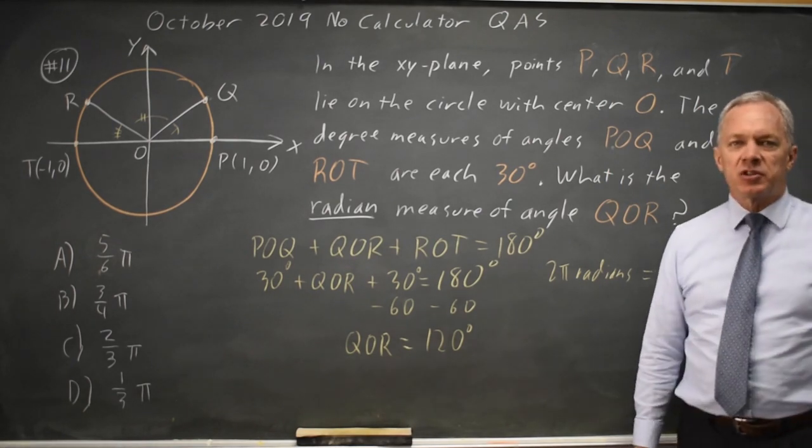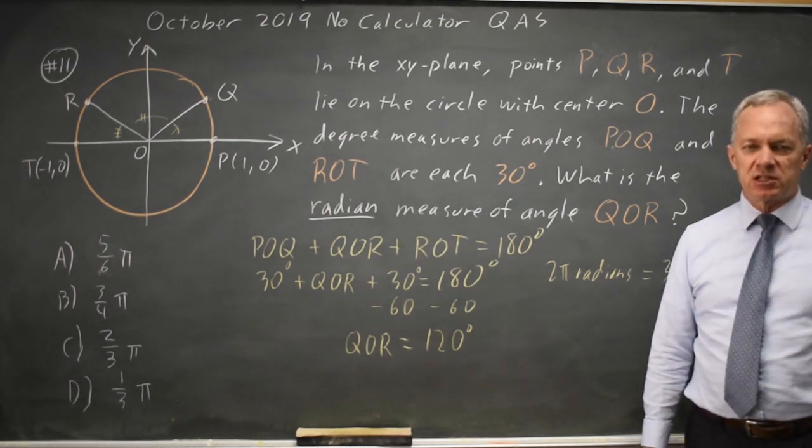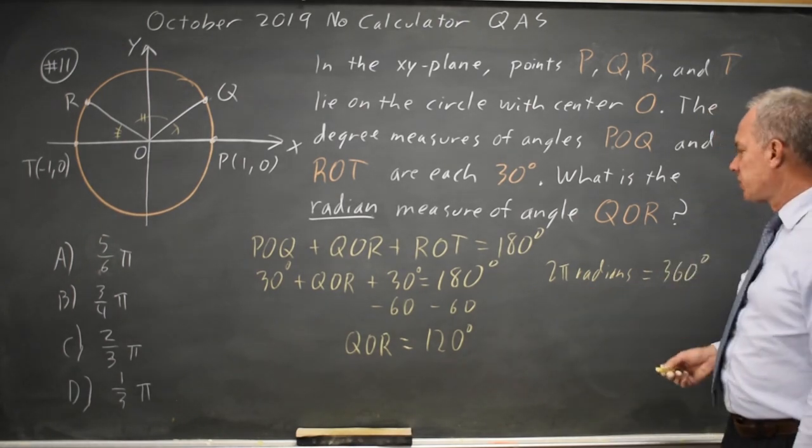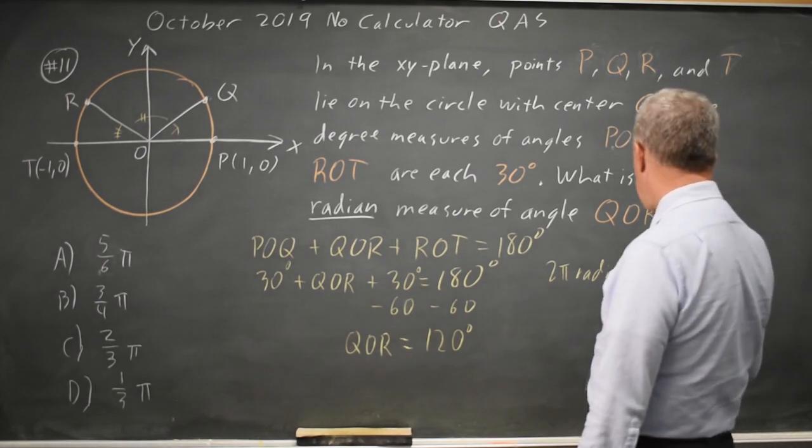If you don't know that off the top of your head, the formula sheet at the start of each math section tells you that there are 2 pi radians in a circle and 360 degrees in a circle. So dividing,